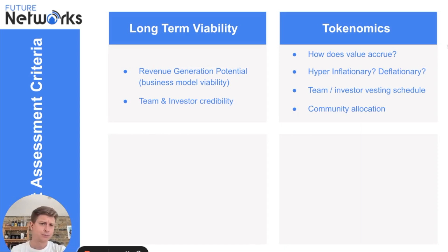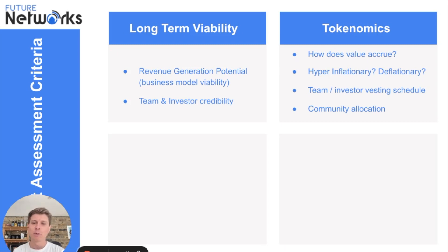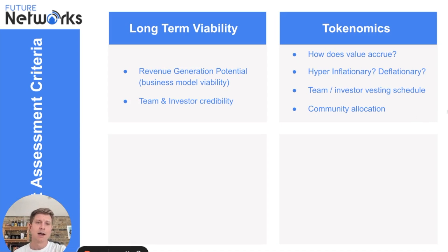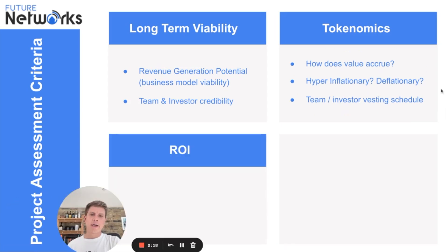Community allocation is also really important. For example, if a project has a maximum supply of 100 tokens and only one percent goes to the community as rewards, it's probably not attractive. But if 60, 70, 80, or even up to 100 percent goes toward the community, that makes it a far more attractive project for a hardware investor.